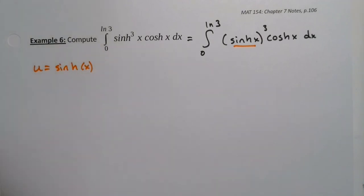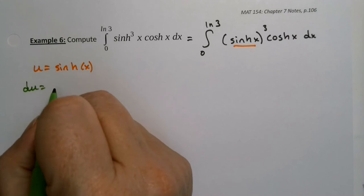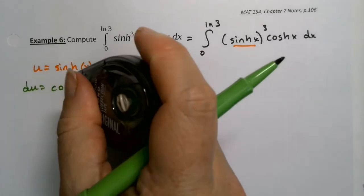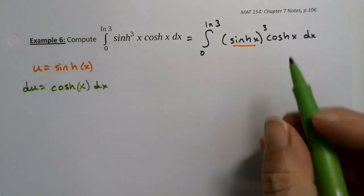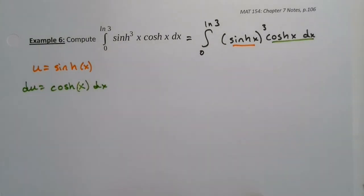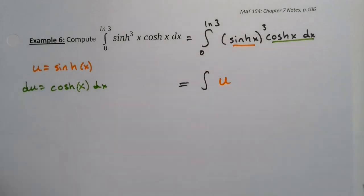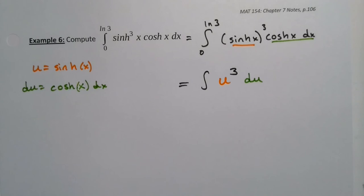du is the derivative of sinh, which is cosh(x) dx — exactly what we have. So we're going to be integrating u³ du. Could this get any easier?